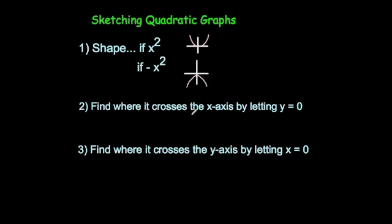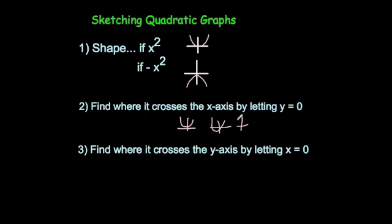Secondly, you need to find where the graph crosses the x-axis. You do that by letting y equal zero. If you let y equal zero then you can factorize and solve it and find out the values for x, and that will be where the graph crosses the x-axis. If you can't solve the quadratic, then the graph may not touch the x-axis — the parabola may be above the x-axis. You may find two locations, only one location where it touches the axis, or it may not cross the axis at all.